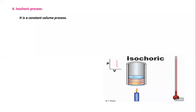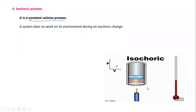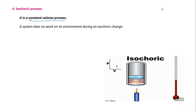The fourth process is the isochoric process. Isochoric means constant volume — the volume does not change. In a diagram, gas is heated at constant volume. Since volume is constant and we are heating the gas, the pressure starts increasing as temperature increases. In this isochoric process, the system does no work on the environment.